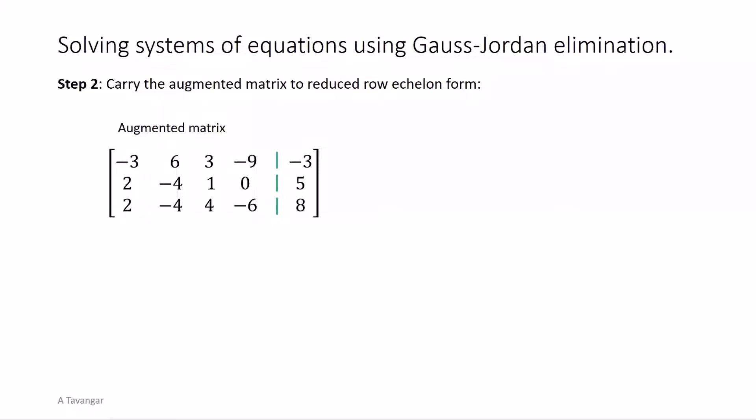We begin with the augmented matrix in its original form. Starting from the left we find the first non-zero column. In this example all columns are non-zero and thus the first column is the first pivot column and the position at top of this column, negative 3, is the first pivot position or leading entry of row 1. The first step is to create a 1 in the upper left corner. So we multiply the first row by 1 over negative 3. This number 1 is called the leading 1 of the first row.